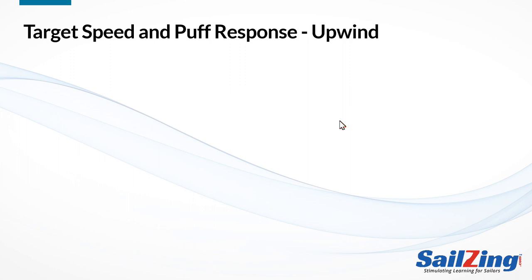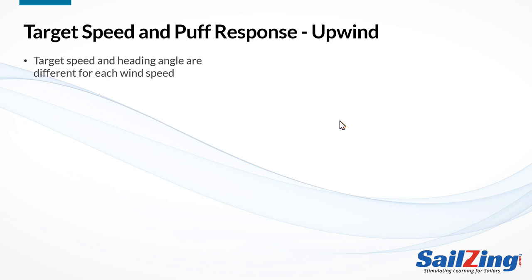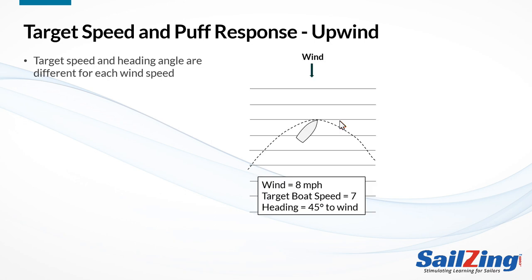When sailing upwind, many sailors have trouble getting the most out of the boat in a puff. The target speed concept can help you understand the best way to respond and maximize your VMG. Realize that target speed and heading angle are different for each wind speed. In our first example, the target speed was 7 — let's assume that occurred with the true wind at 8 miles an hour and a heading of 45 degrees to the true wind.